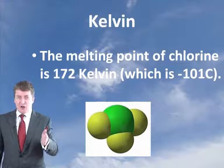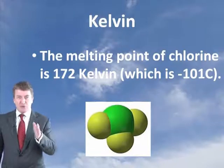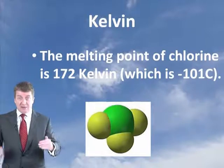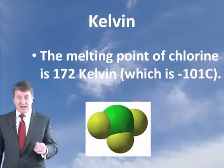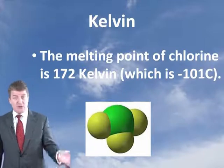At zero Kelvin every single thing on our planet would be a solid — chlorine is a solid, water is a solid, and steel is a solid. As you start to heat these up they'll start to change form, gaining more energy and beginning to change from a solid to a liquid. The melting point of chlorine is 172 degrees Kelvin, which is minus 101 degrees C.